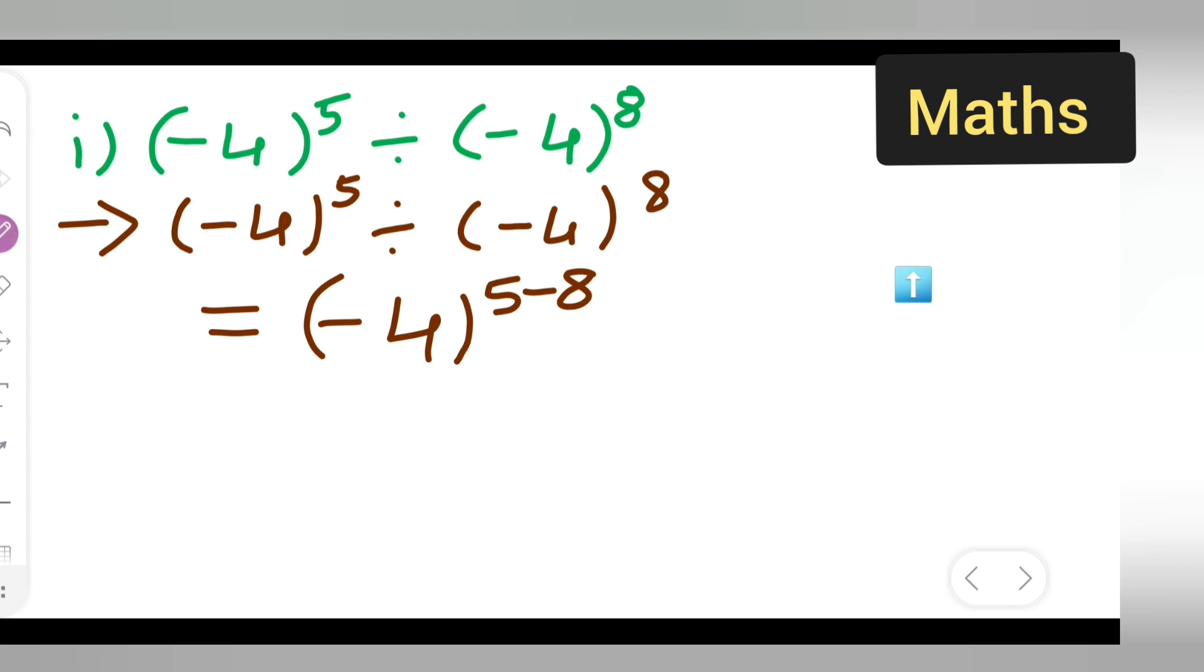Next step is going to be minus 4 raised to power of minus 3 because 5 minus 8 will be minus 3, sign of the greater number. If you all want a positive part.